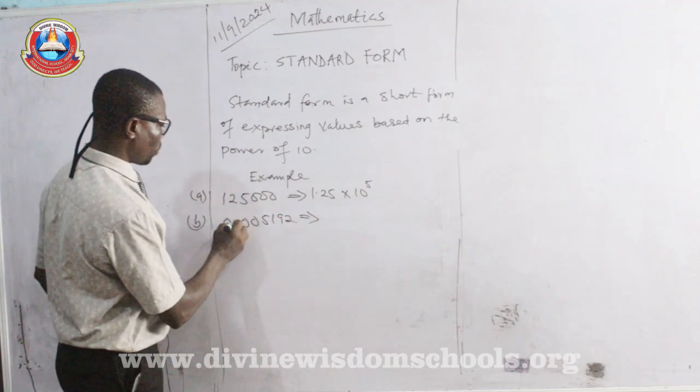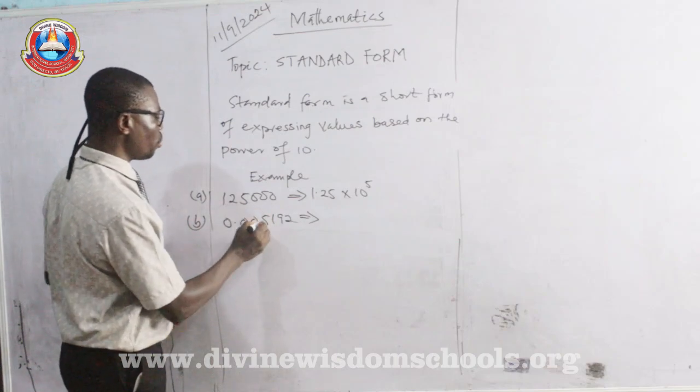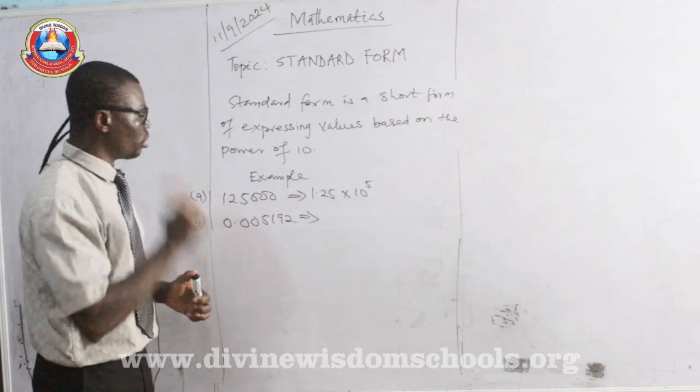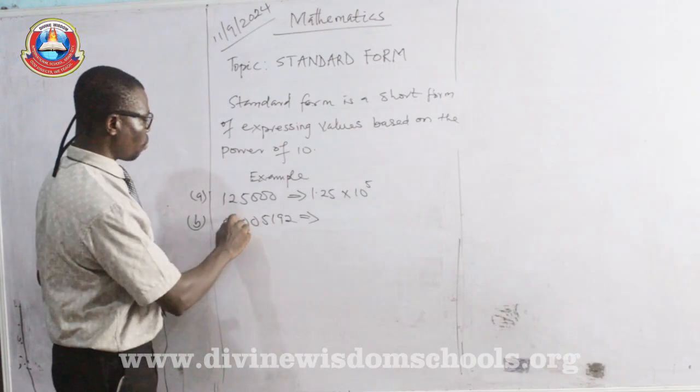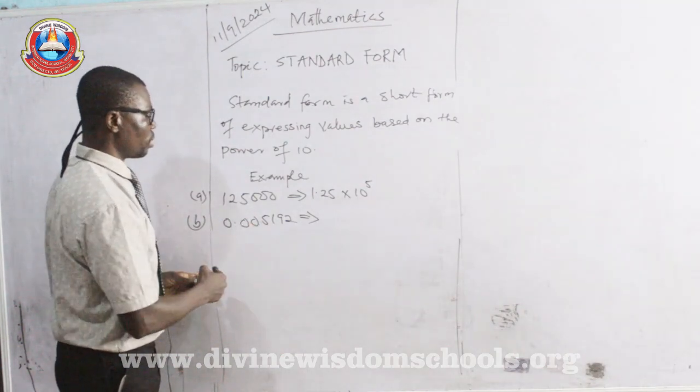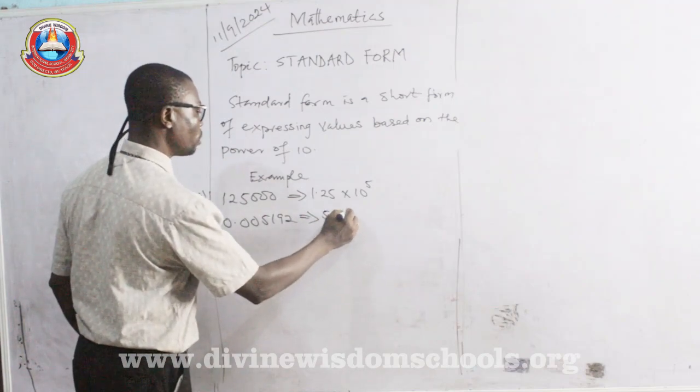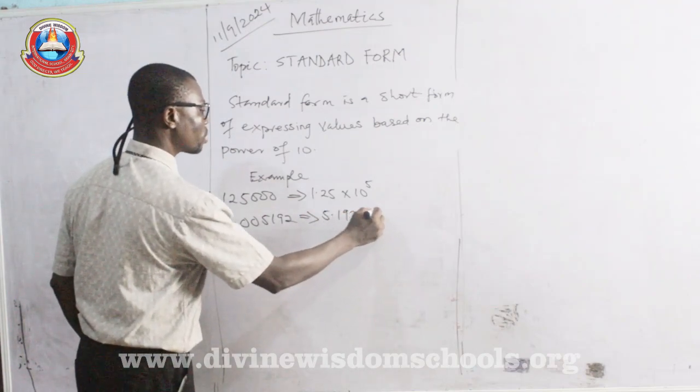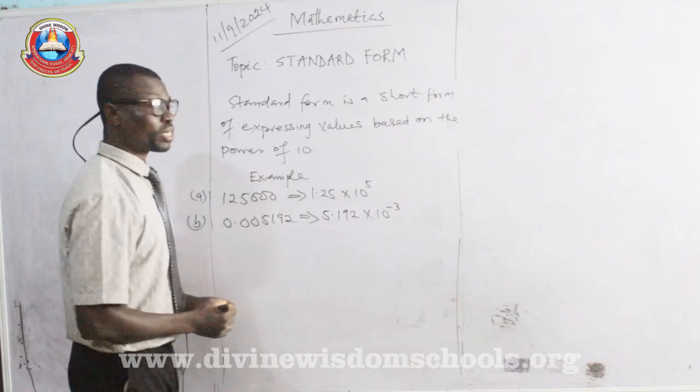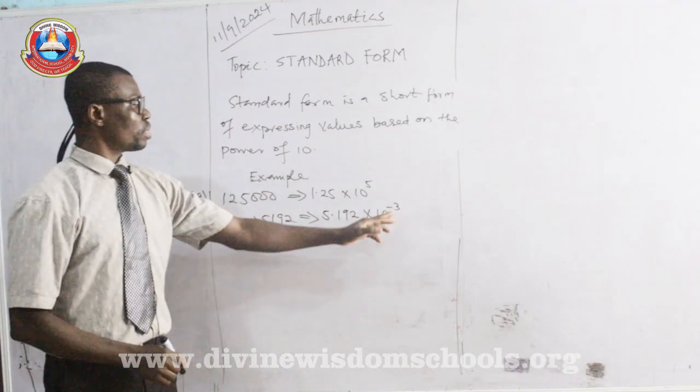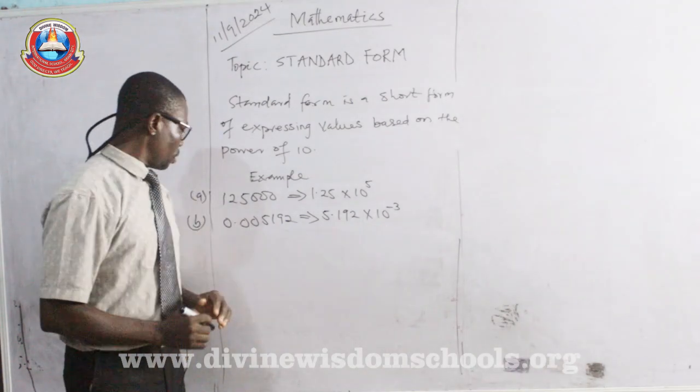You see that we are going to move this way, 1, 2, and 3. We will stop after the first real digit. This is the first real digit. Then, it becomes 1, 2, and 3. So, this number we express in standard form as 5.192 times 10 raised to the power of negative 3. What we refer to as minus 3. This minus 3 is referred to as the power of the 10 there.